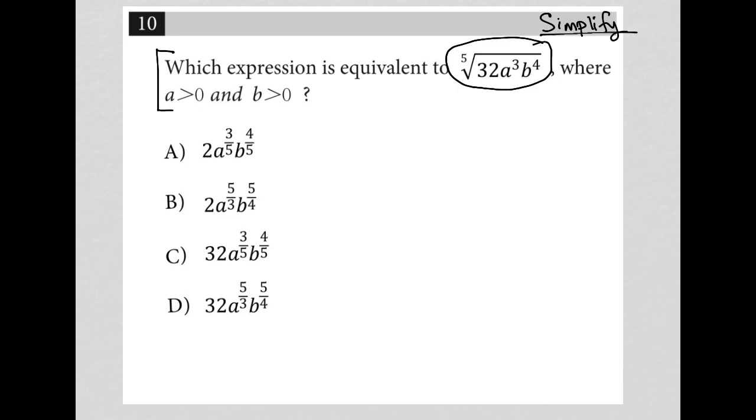So I'm going to rewrite this expression here. I have the fifth root of 32 a to the third b to the fourth. So if I'm right about the fact that this is a simplification question I should only need to simplify this and by simplifying it I should have my correct answer.